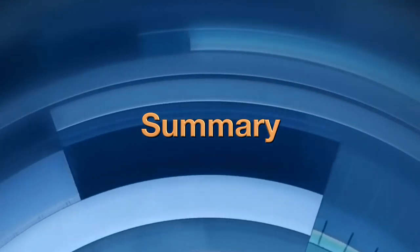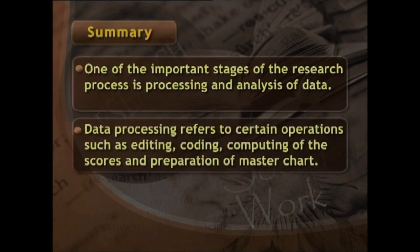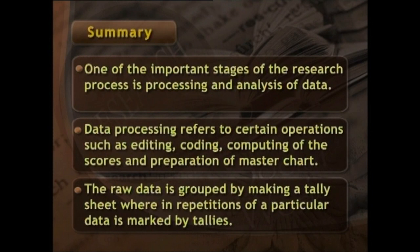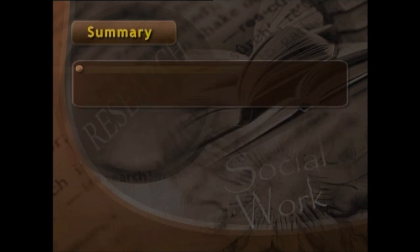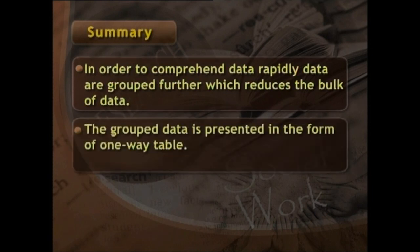Summary. One of the important stages of the research process is processing and analysis of data. Data processing refers to certain operations such as editing, coding, computing of scores, and preparation of a master chart. The raw data is grouped by making a tally sheet, wherein repetitions of particular data are marked by tallies. In order to comprehend data rapidly, data are grouped further — which reduces the bulk of data — and the grouped data is presented in the form of a one-way table.